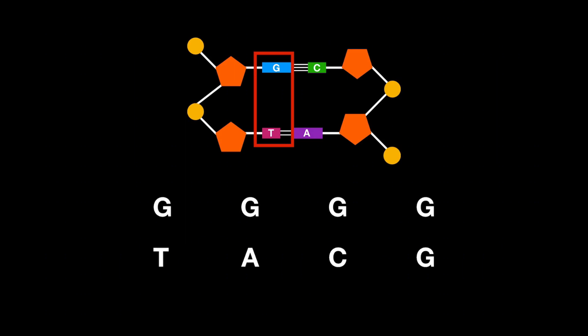However, it also doesn't have to have started with a G. Here you can see the four possibilities had the two base sequence started with a G, but it also could have started with a C, an A, or a T.